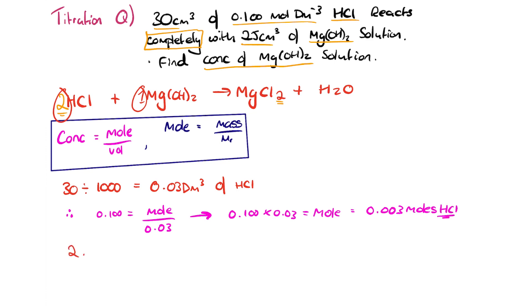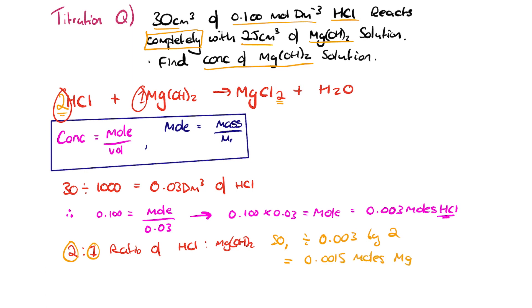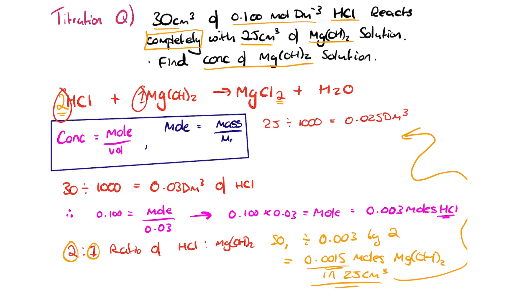Since 2 moles of HCl react with 1 mole of Mg(OH)₂, we divide 0.003 by 2 to get 1.5 × 10⁻³ moles of magnesium hydroxide. The volume given is 25 cm³ = 0.025 dm³. Concentration = 0.0015 ÷ 0.025 = 0.06 mol dm⁻³ of magnesium hydroxide solution. In a full A-level exam this could be worth five or more marks, but it's straightforward when broken down step by step.